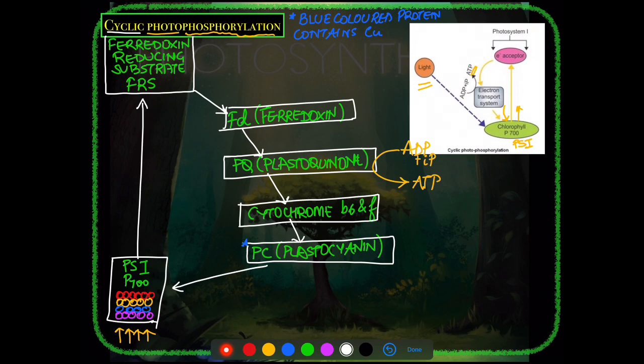The entire cyclic photophosphorylation occurs at 700 nm, or when only light of wavelength beyond 680 nm is available. PS1 traps light at P700 throughout this process.